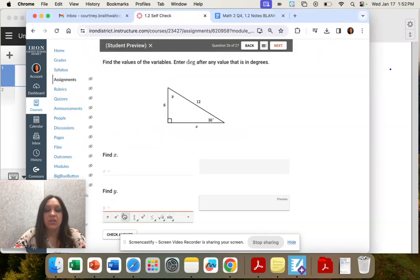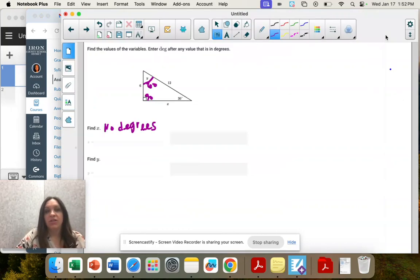So this is 60 degrees, and you can find these side lengths using our 30, 60, 90 triangle. You can use Pythagorean theorem. You can use trigonometry.